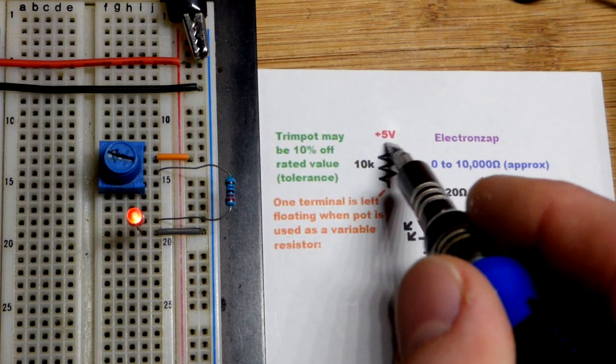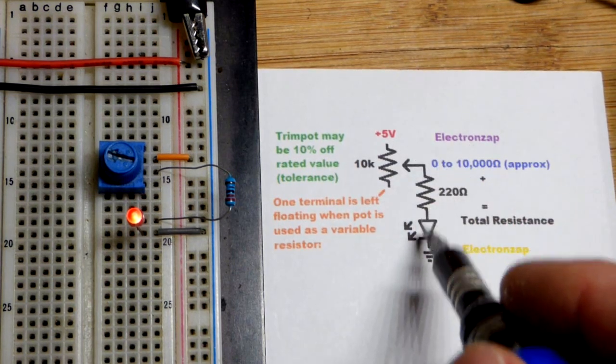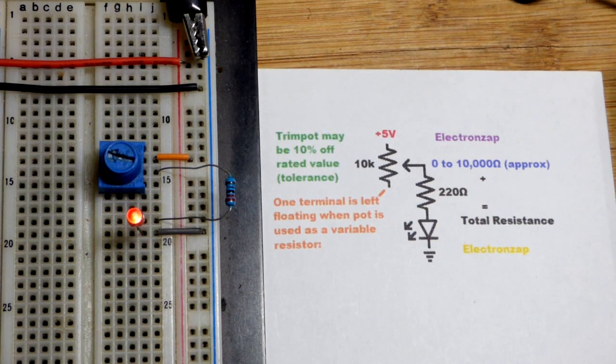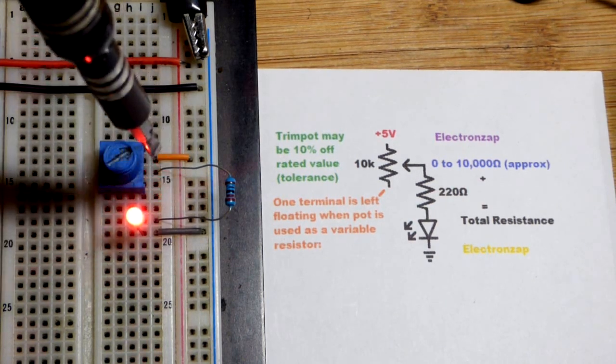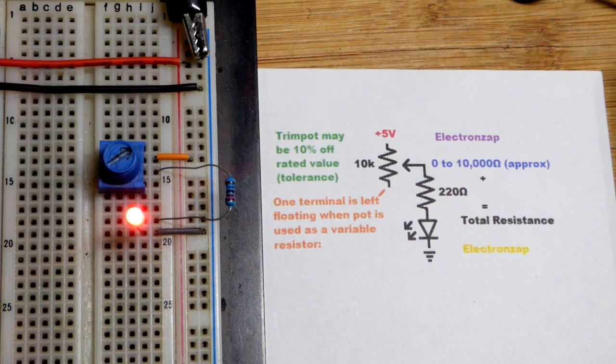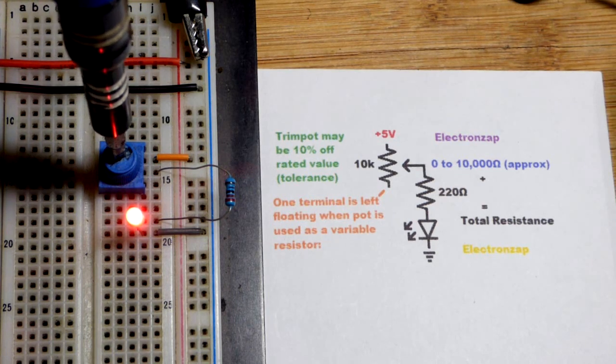So we have either zero ohms of resistance right there. That's why we have a 220 ohm resistor protecting the LED, because we're dealing with five volts there. And without that resistor, if we just connected the LED directly there, then it would burn out if we don't limit current some other way.